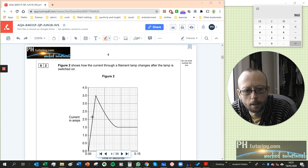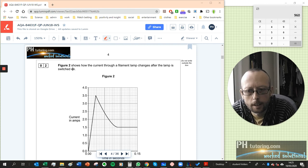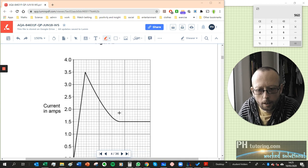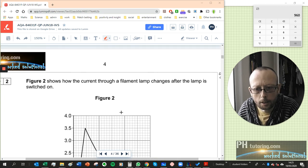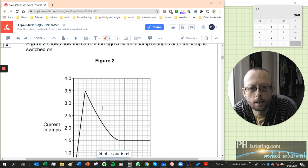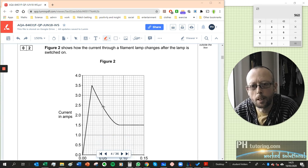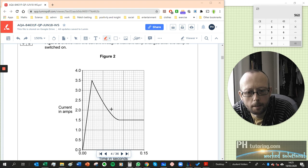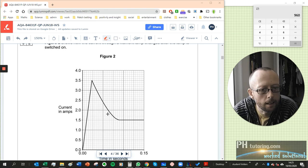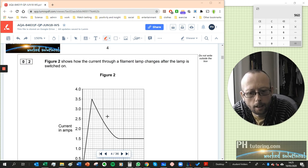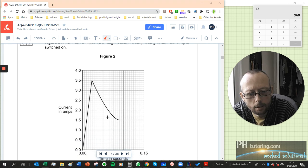This one's a little bit of a tricky question actually, so let's read it carefully. Figure two shows how the current through a filament lamp changes after the lamp is switched on. Now sometimes for these questions people get a bit thrown because the graph might look complicated, and they might think they don't really know much about electricity or about current, so they back away from the question. You don't actually need to know anything about electricity or current to understand this question, you just need to know how to read a graph.